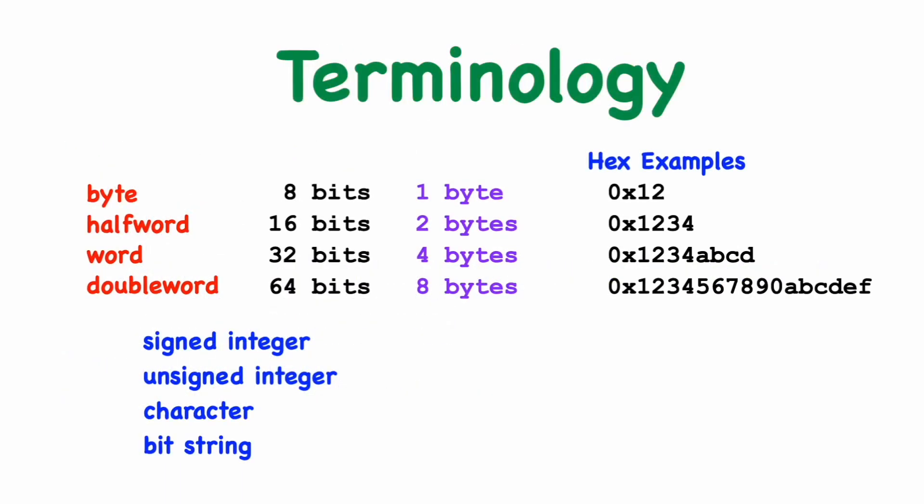Before going any further, let's go over the basic terminology of data sizes. A byte is, of course, 8 bits, and a word is 4 bytes, or 32 bits, in size. We can also define a half word as 16 bits in size, and a double word as 64 bits in size. So here are some examples in hex of those different sizes.